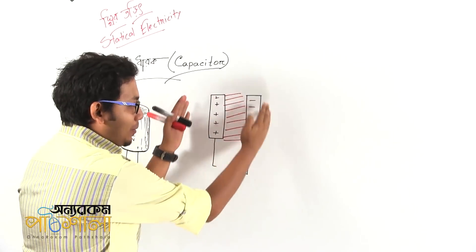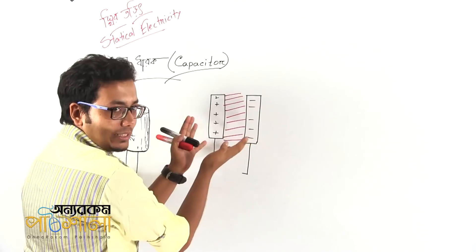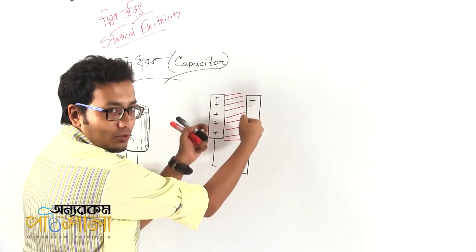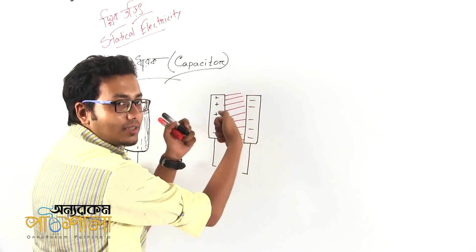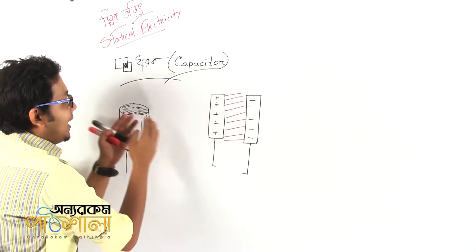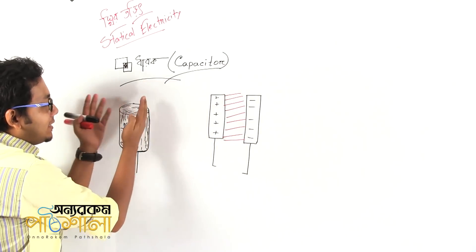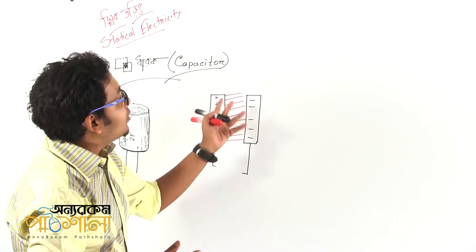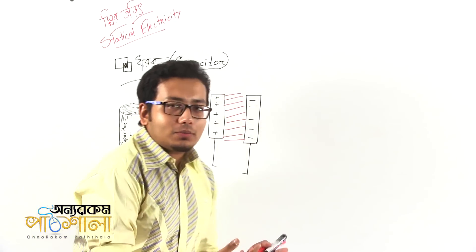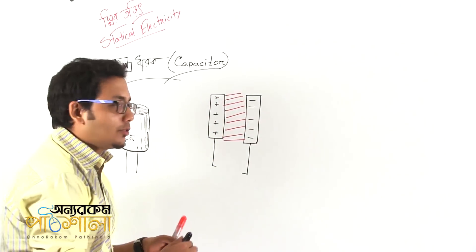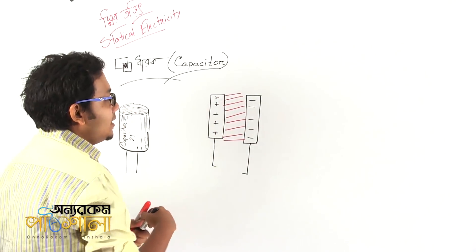The charge capacitor — the charge capacitor is shaped like a cylinder in its original shape to the body. This is the capacitor. Please remember this part.